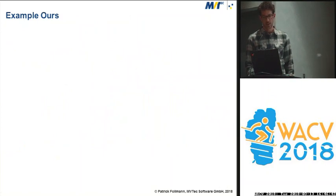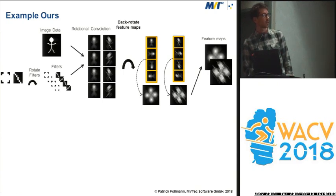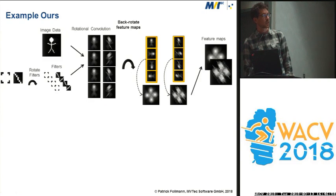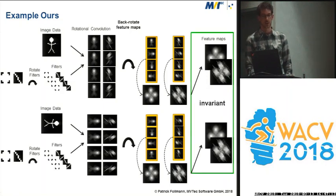Let's see an example. If you use an upright image and apply your rotated filters, you get rotational convolution outputs as before. But now you back-rotate these feature maps, and if you pool over them, you get some strangely looking feature maps in this example. The good thing is that if you rotate the input image, you will get exactly the same result — and you have rotational invariance.